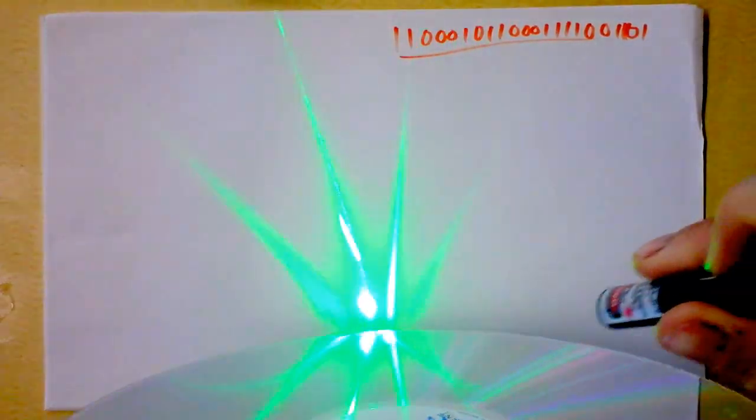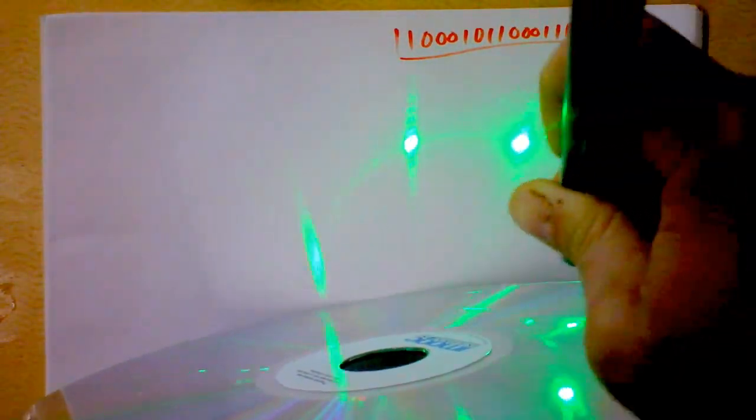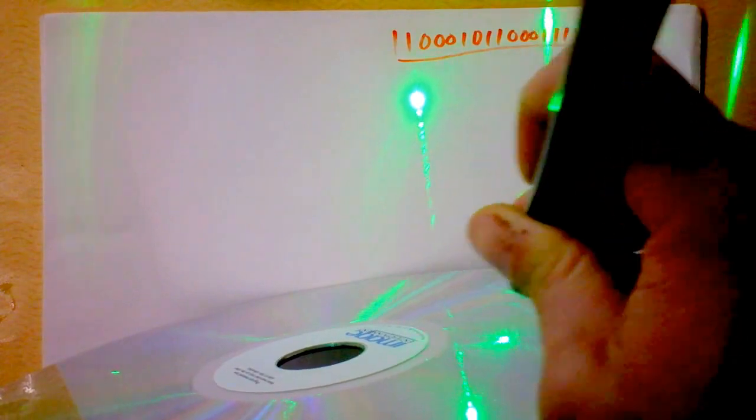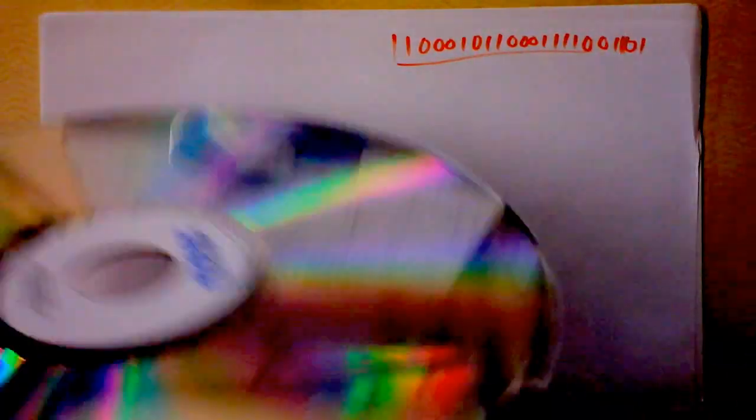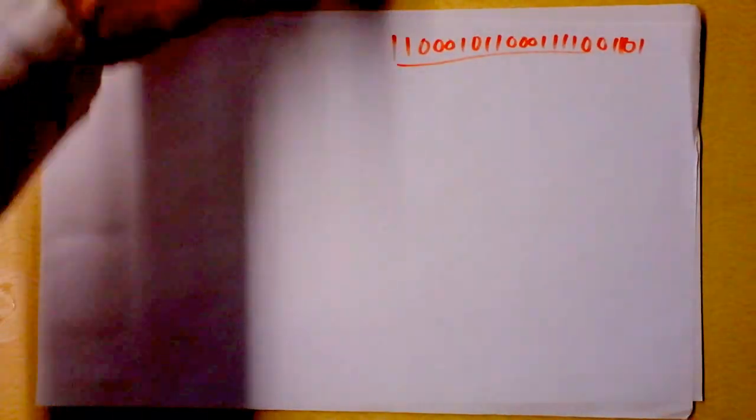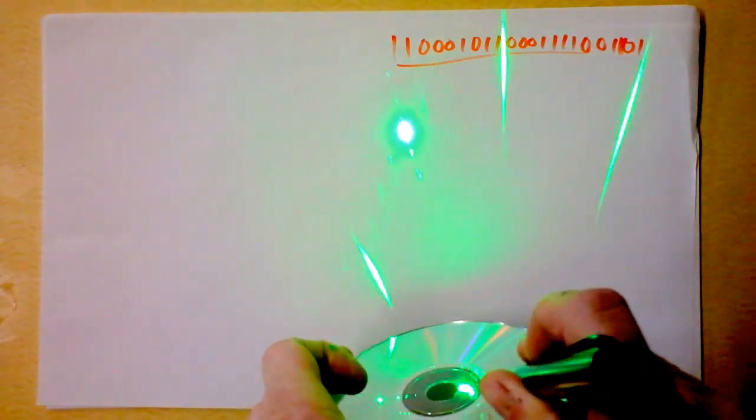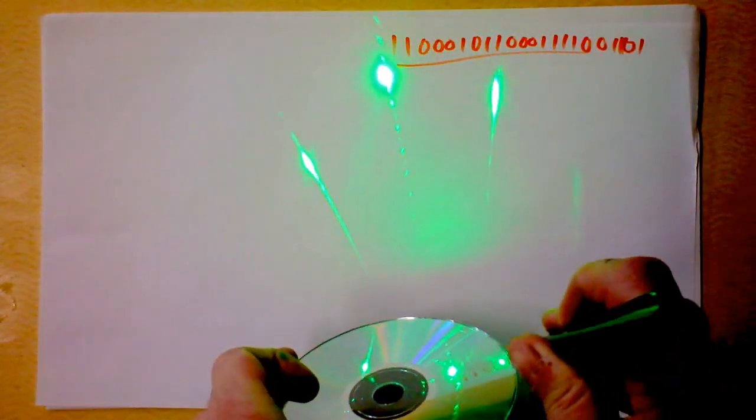Like what if you shined a laser on it? Watch this. All kinds of awesome things happen. In fact, see all the multiple dots? That means there must be some kind of diffraction. I guess we can do that with a CD too. Let's try it. Look at all those dots. Probably diffraction going on there too.